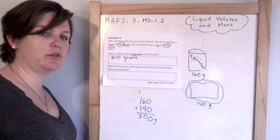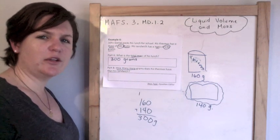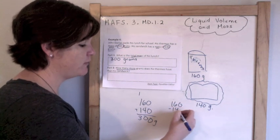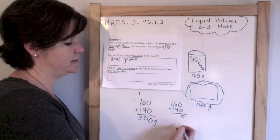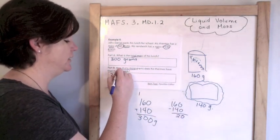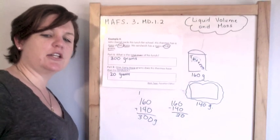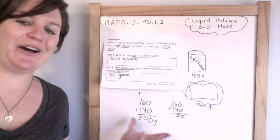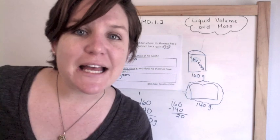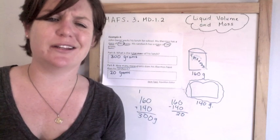How many more grams does his thermos have than his sandwich? When you see 'how many more,' you subtract. 160 minus 140: 0 minus 0 is 0, 6 minus 4 is 2, 1 minus 1 is 0. So 20 grams. Notice again, none of my work went into the boxes — it was all outside. Only the answer goes into the box. I know I keep beating that point, but that's what you've got to do. I don't want you to lose points because you showed your work in the box.